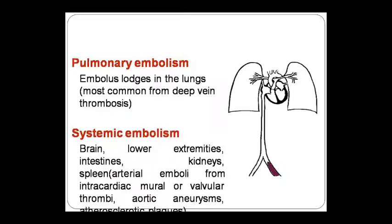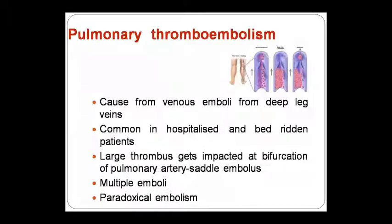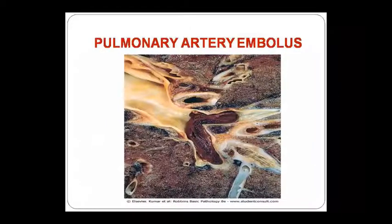Systemic embolism, also called arterial embolism, is seen in the brain, lower extremities, intestines, kidney, and spleen. Arterial emboli originate from intracardiac mural or valvular thrombi, aortic aneurysm, or atherosclerotic plaques. Venous emboli originate from deep leg veins and are seen in hospitalized or bedridden patients. Large emboli impact at the bifurcation of the pulmonary artery causing saddle embolus. Paradoxical embolism occurs through septal defects allowing entry into systemic circulation. The image shows the embolus at the bifurcation of the pulmonary artery.